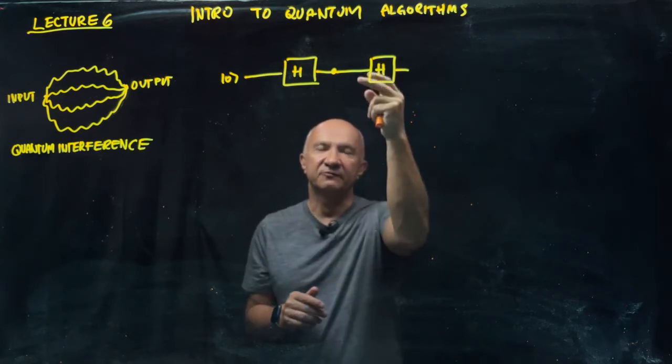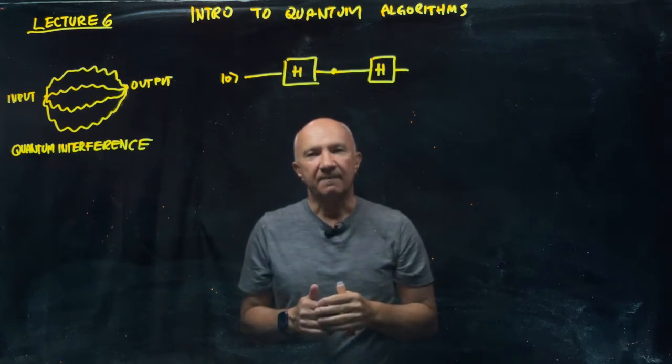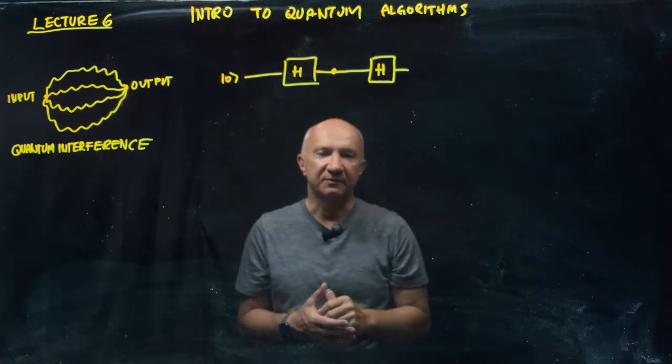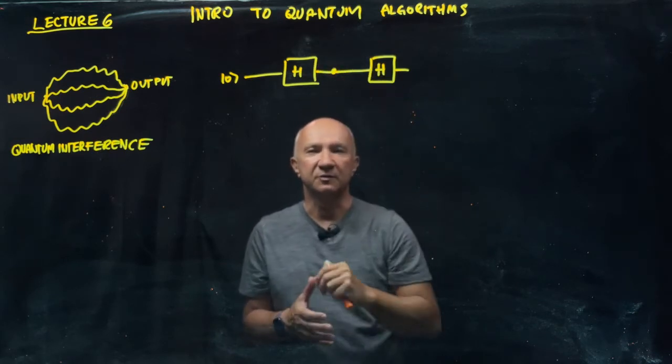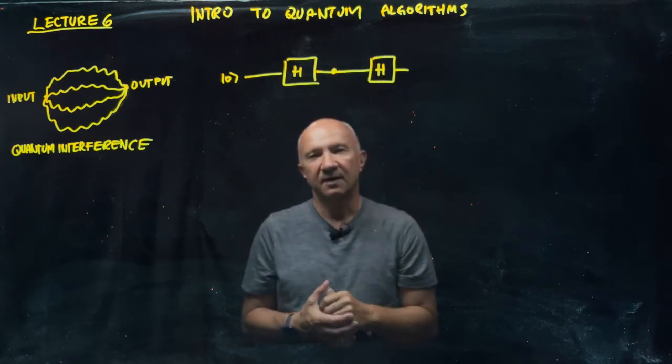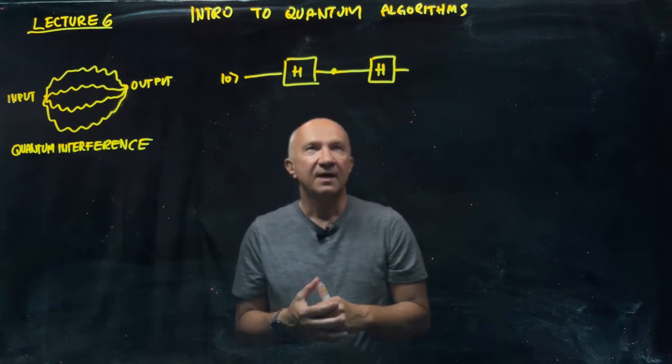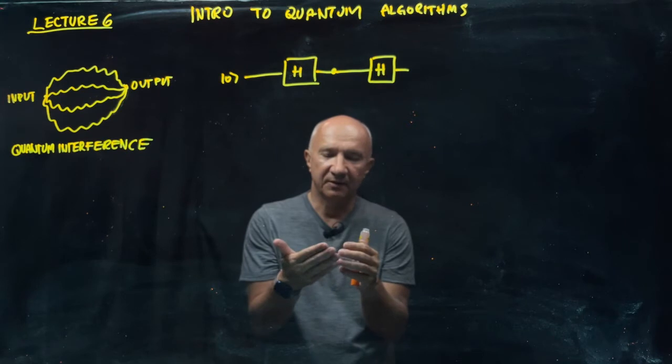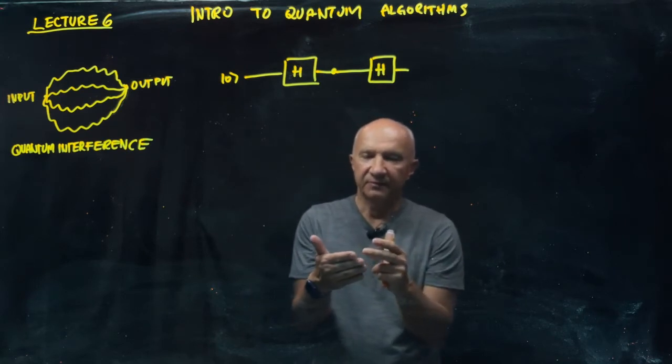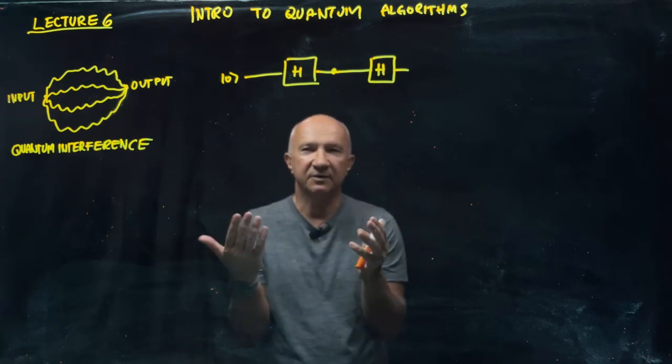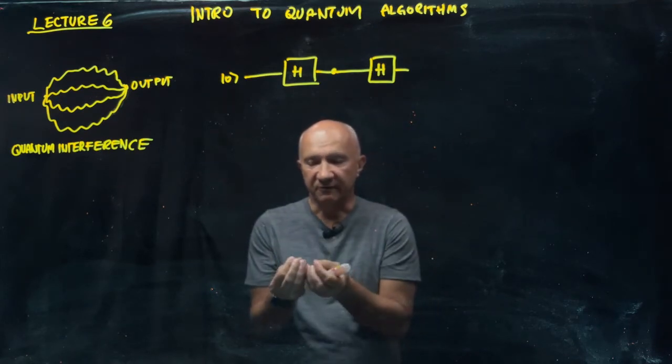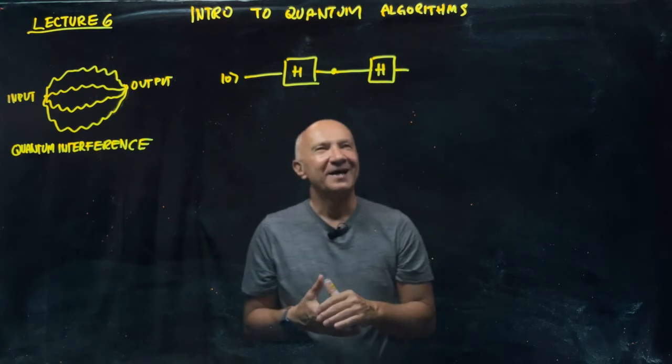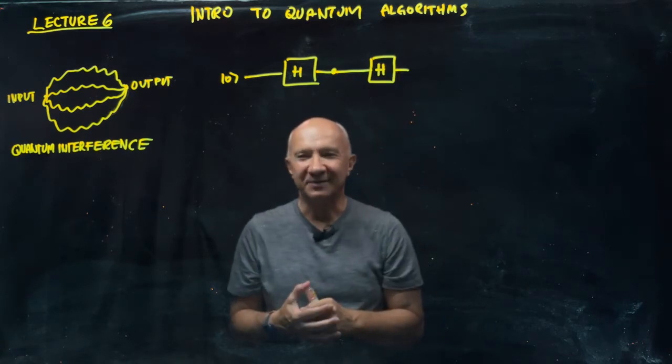So the phase gate will introduce different phase factors into the two computational paths that you have in this particular diagram, one corresponding to qubit being state 0, the other one corresponding to the qubit being state 1. And then you have to close this interference. It's not good at this point to measure the bit values, because then you lose the advantage of quantum interference. You have to close the interference to see the interference, so to speak. And so the Hadamard, the second Hadamard plays this role.